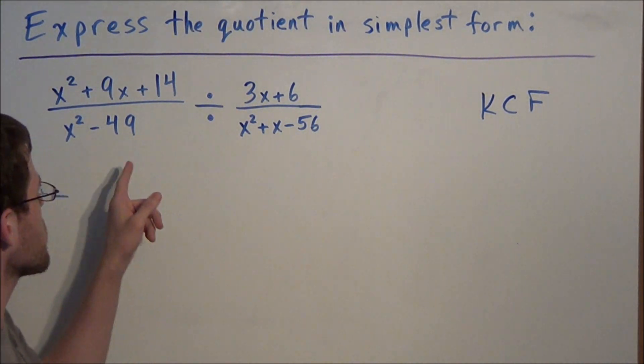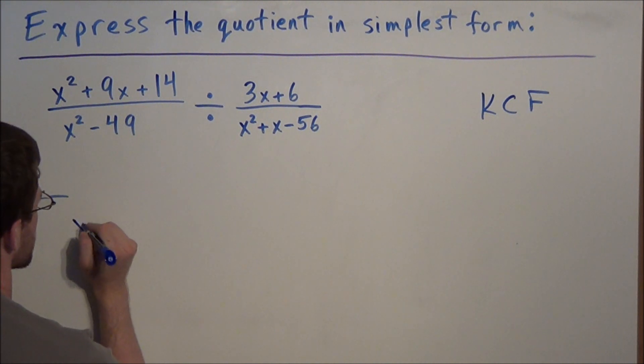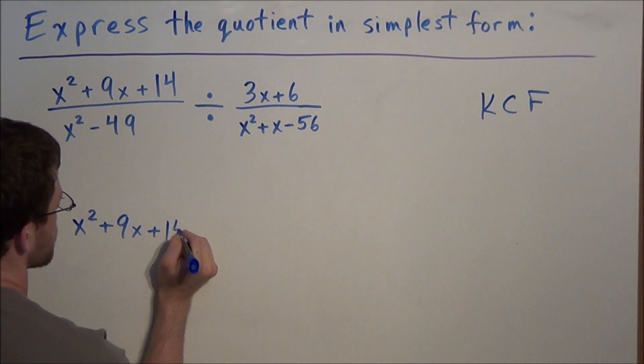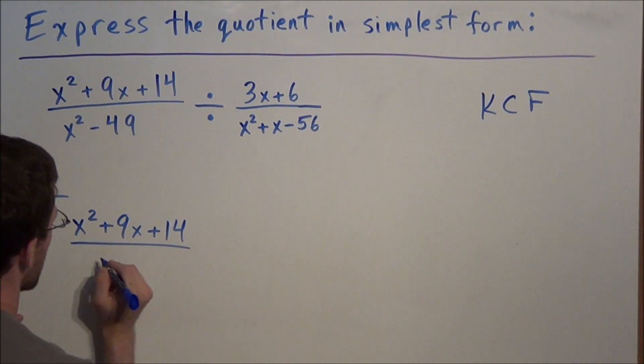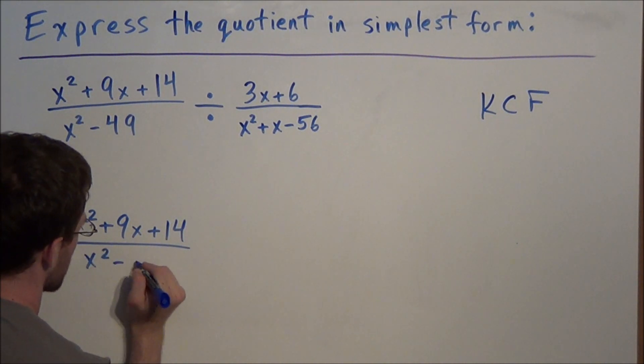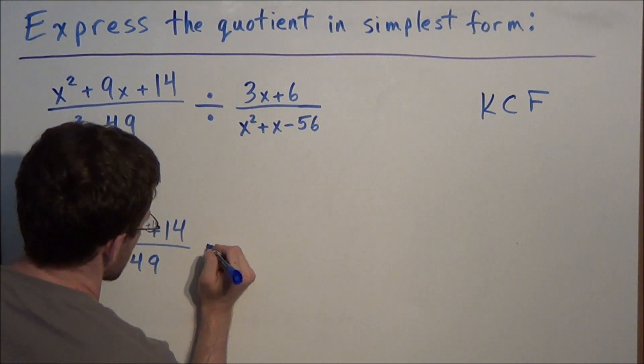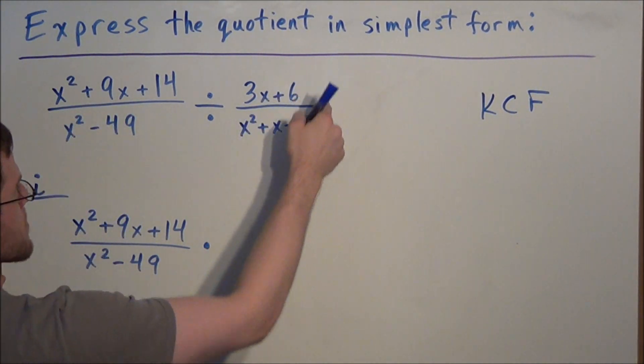To do so we keep the first fraction so we have x squared plus 9x plus 14 over x squared minus 49. Then we change the operation to multiplication and we flip the second fraction.